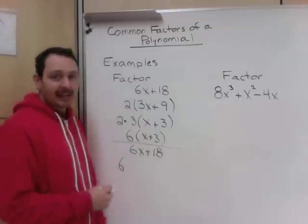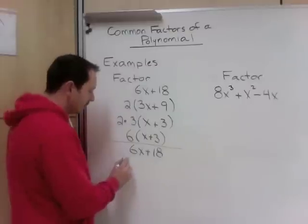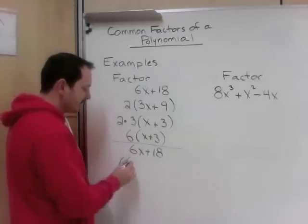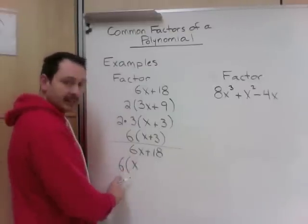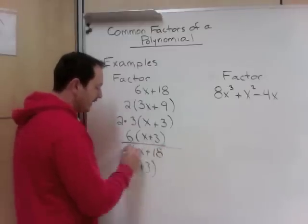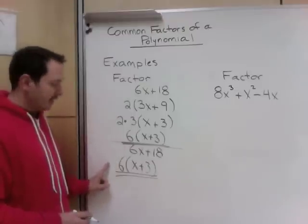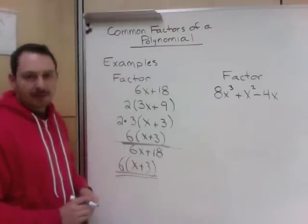So if I had taken 6 out right away, and when I say take it out, I don't mean take away like minus. Taking it out means factoring out in this case. So 6x divided by 6 leaves me with x, 18 divided by 6 leaves me with 3, and hopefully you can see here and here I got the same answers. But this one was certainly quicker. I did it in one step because I took out the greatest common factor.